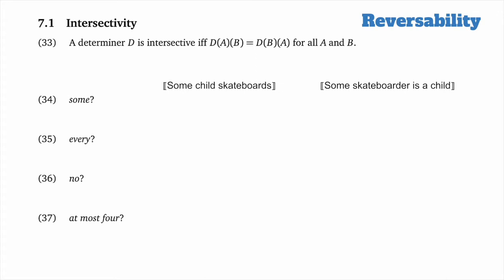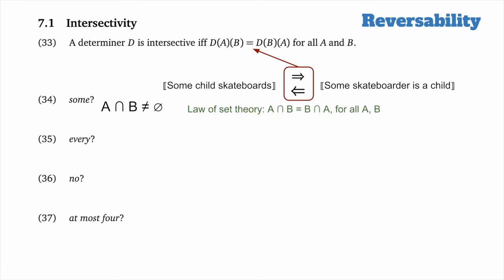It'll be useful to break that notion down into two-way entailment. 'Some child skateboards' entails 'some skateboarder is a child,' and the reverse holds too. Only where the entailments go in both directions can we say that we have the equality demanded by intersectivity. We can look to our theory to understand why some is intersective: its meaning is defined around the set-theoretic relation of intersection, which is entirely reversible. A intersect B equals B intersect A for all sets A and B, so some is predicted to be intersective.